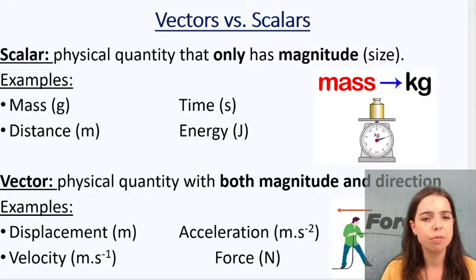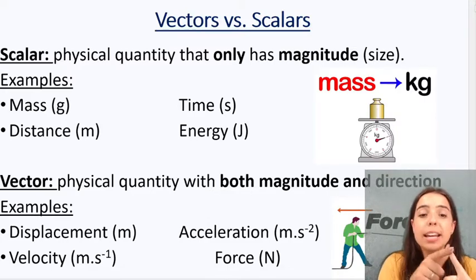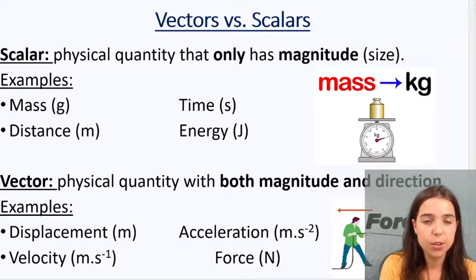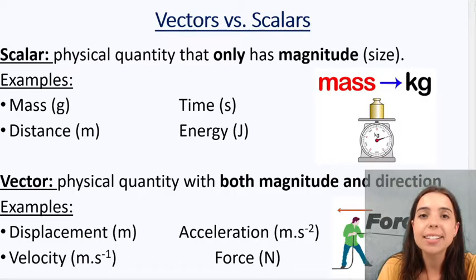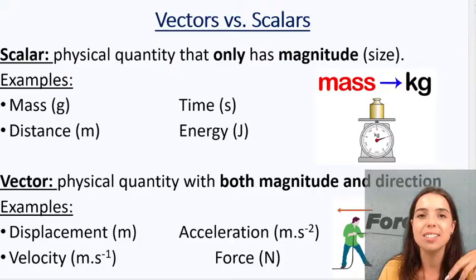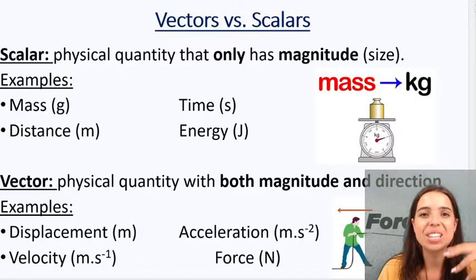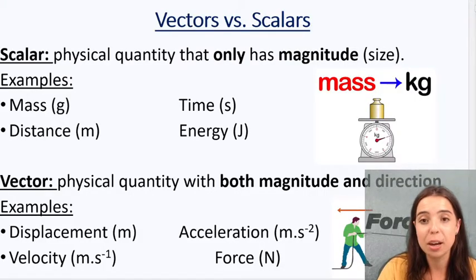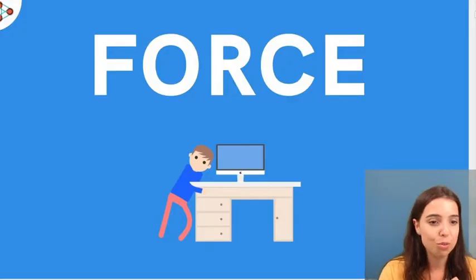So vectors have direction. So what types of vectors do we know? Well, displacement is a vector. So distance is a scalar, displacement is a vector. Velocity is a vector. Speed is a scalar. Acceleration is a vector. Force is a vector. And force is a vector we're going to be speaking about a lot. So we've got force. Force is a vector.